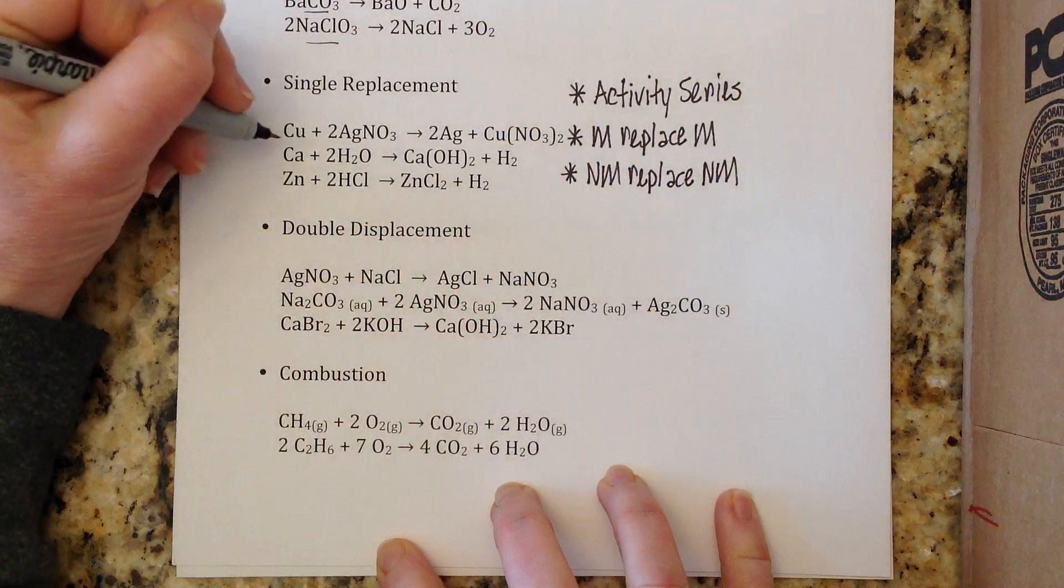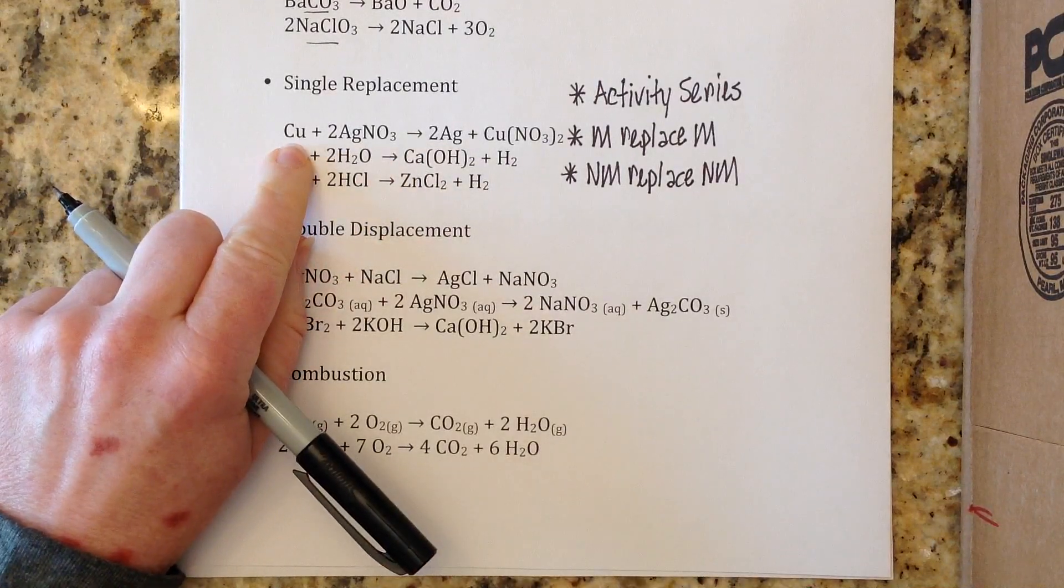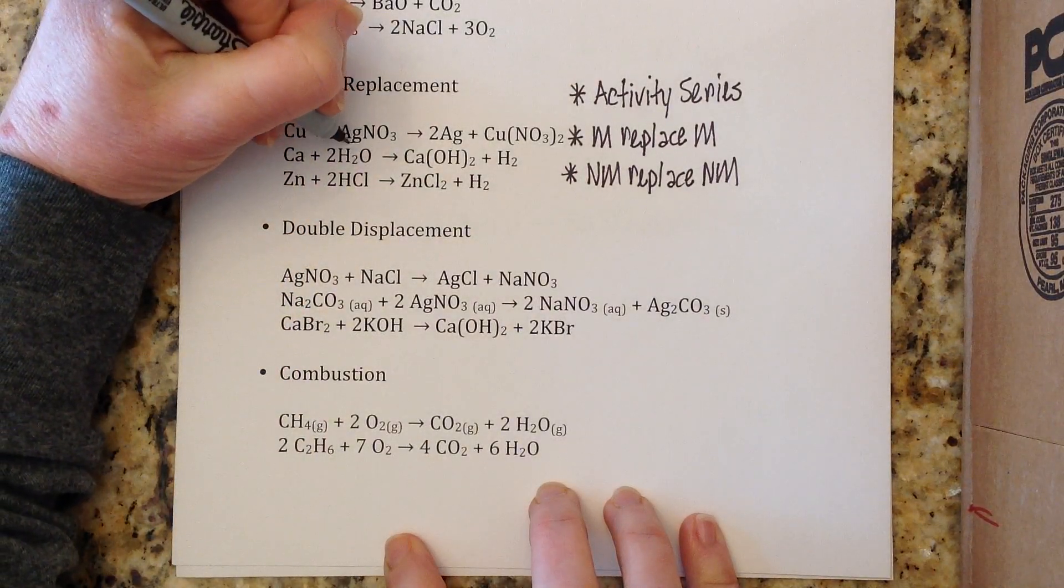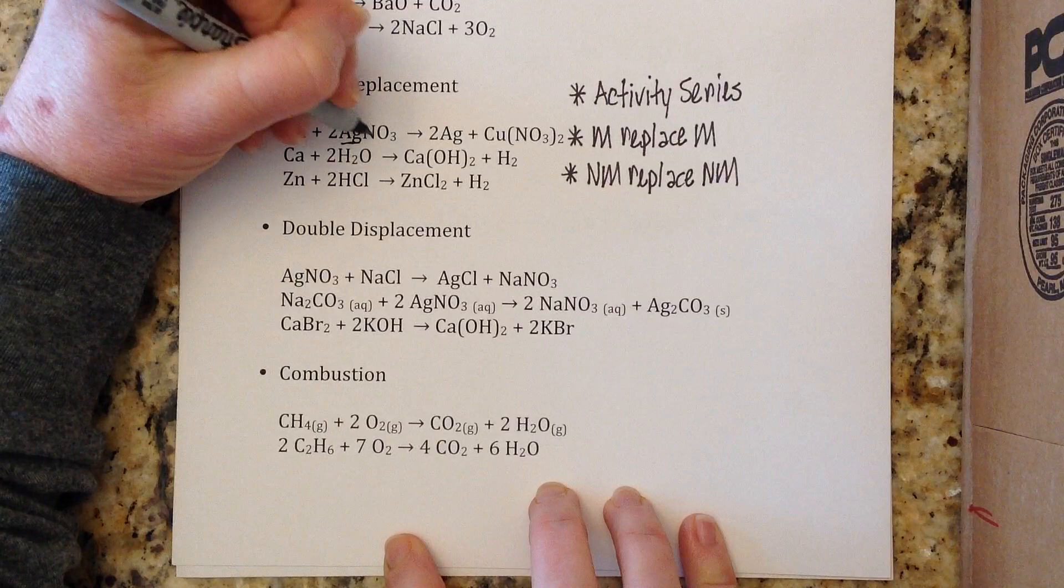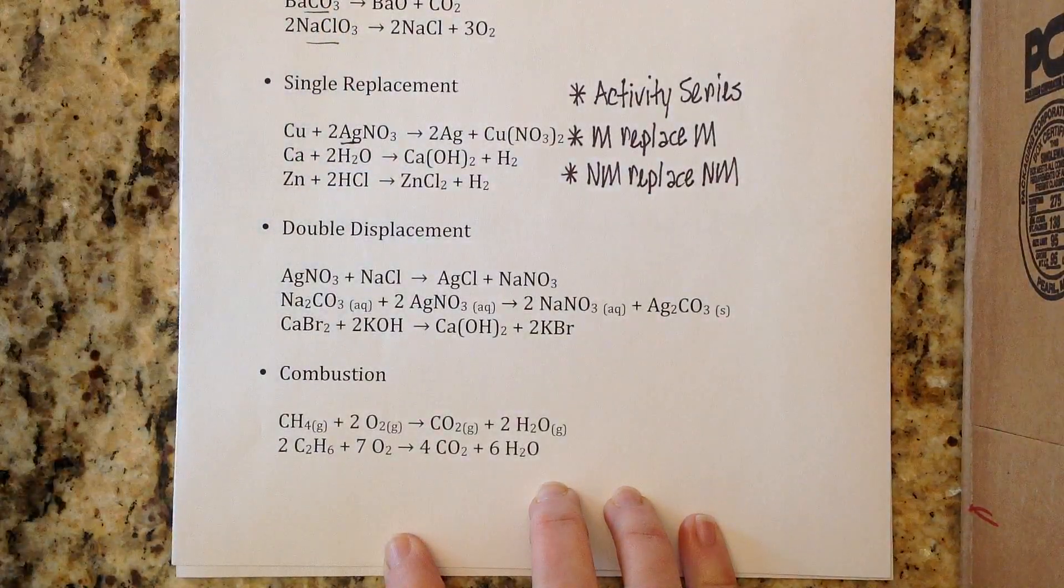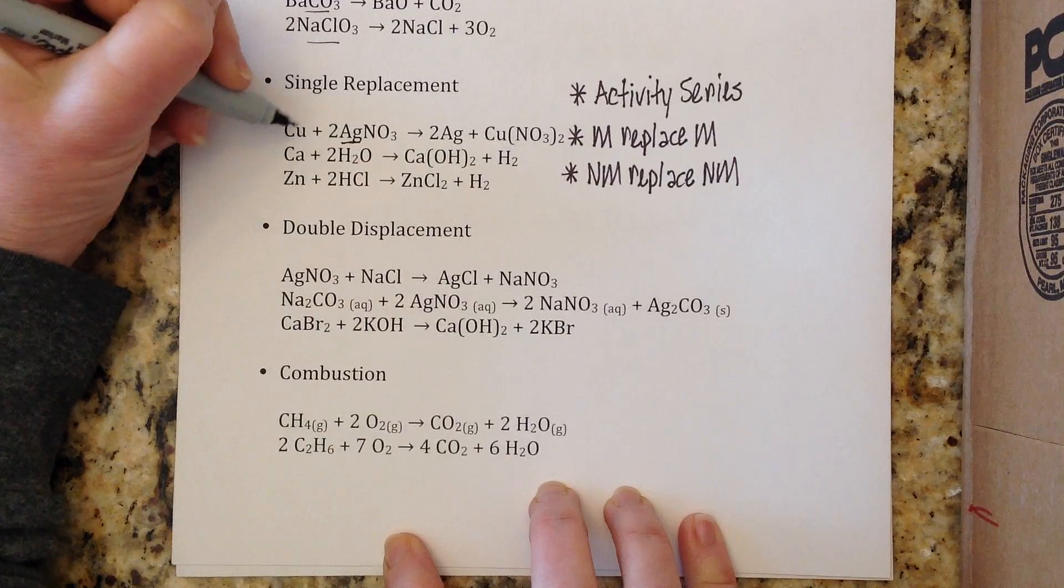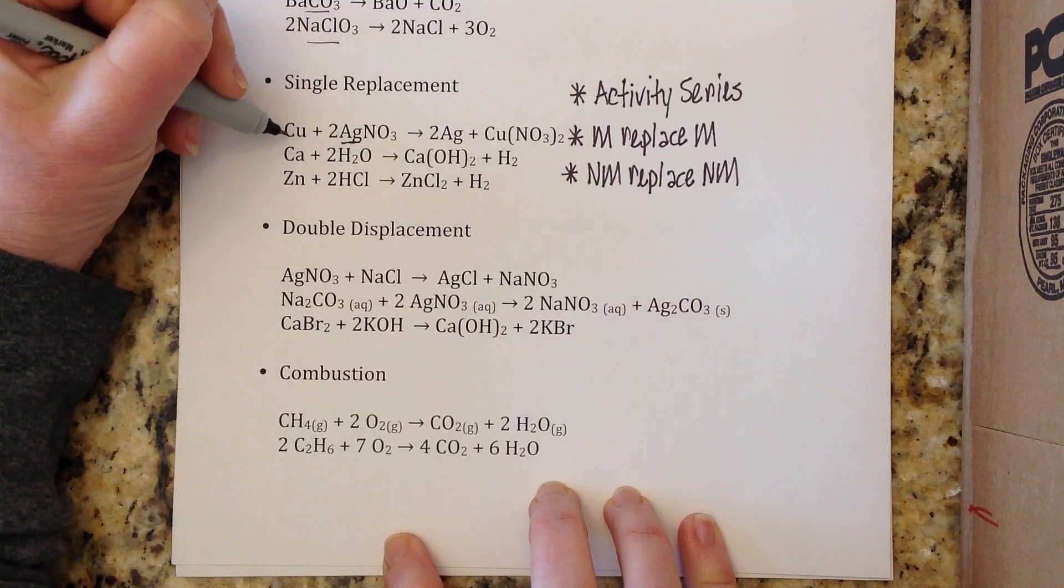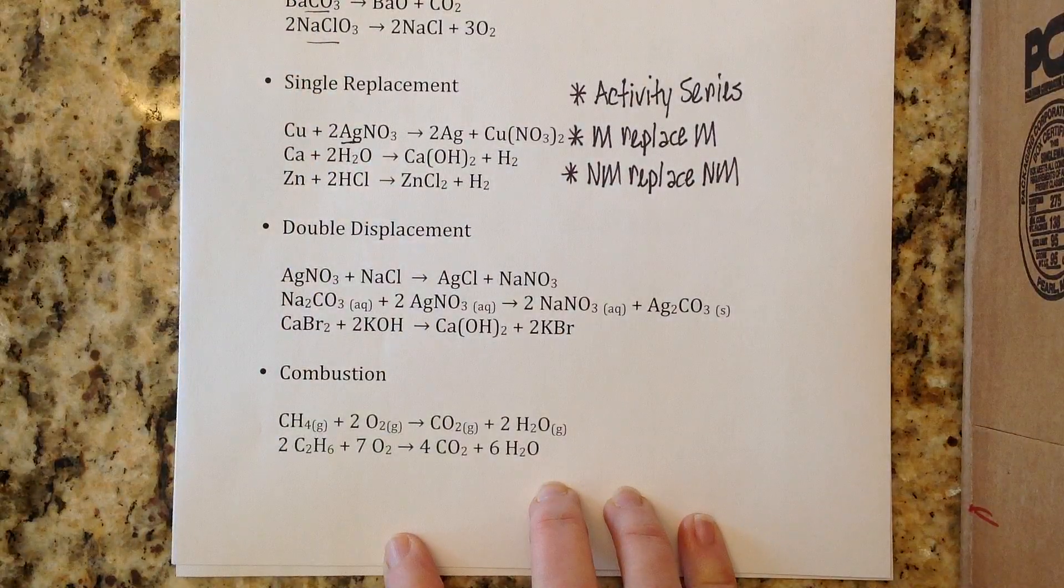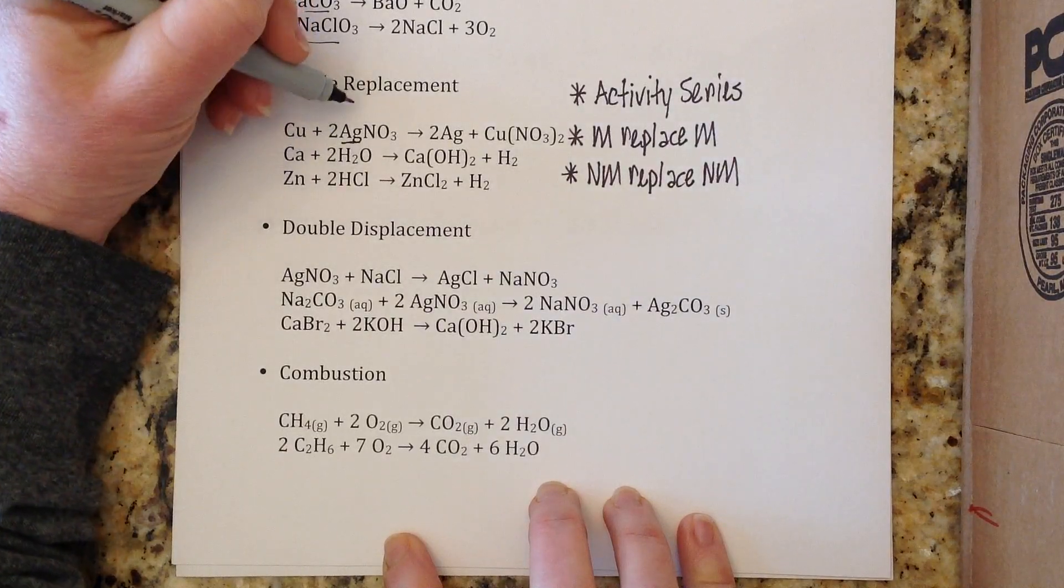For example, copper with silver nitrate - this copper is all by itself and what he's going to try to do is kick the metal out of this combination. A metal will only kick out a metal, so I know copper is going to try to kick silver out and it's not going to try to kick nitrate out. You'll use the activity series to see if copper can indeed kick out the silver.